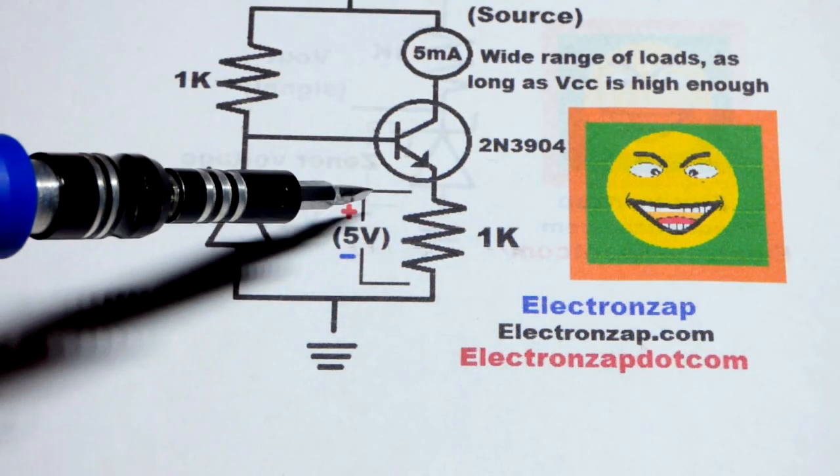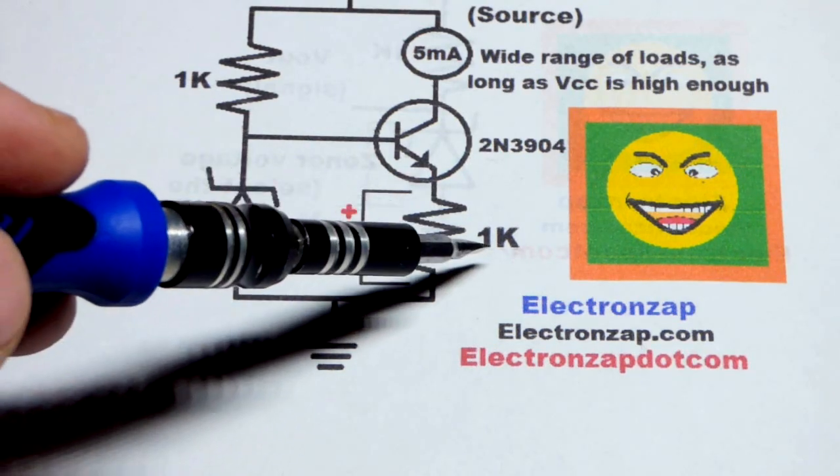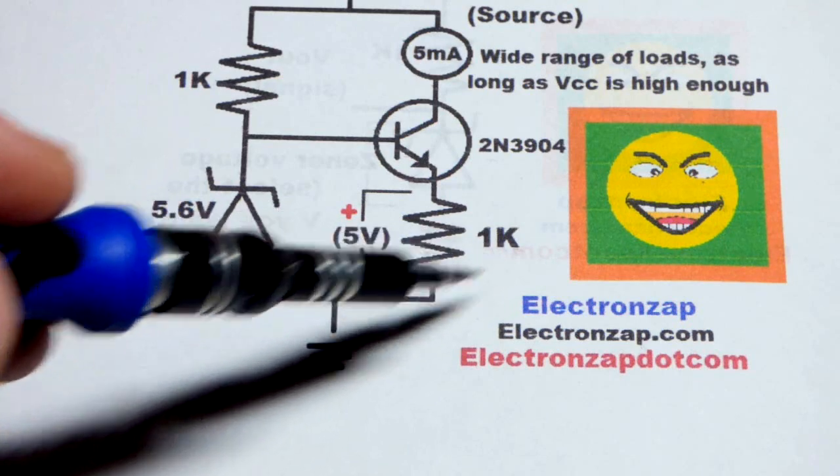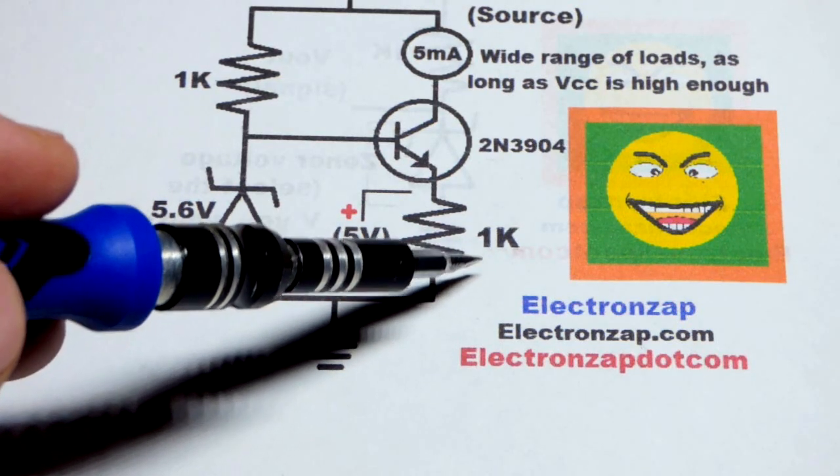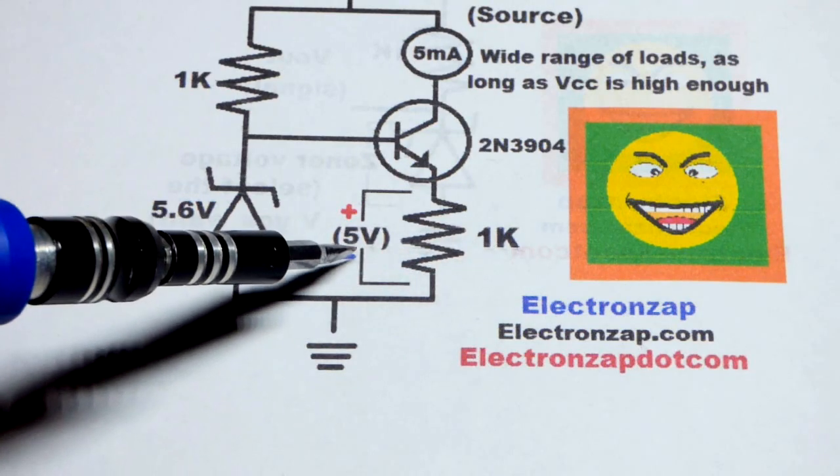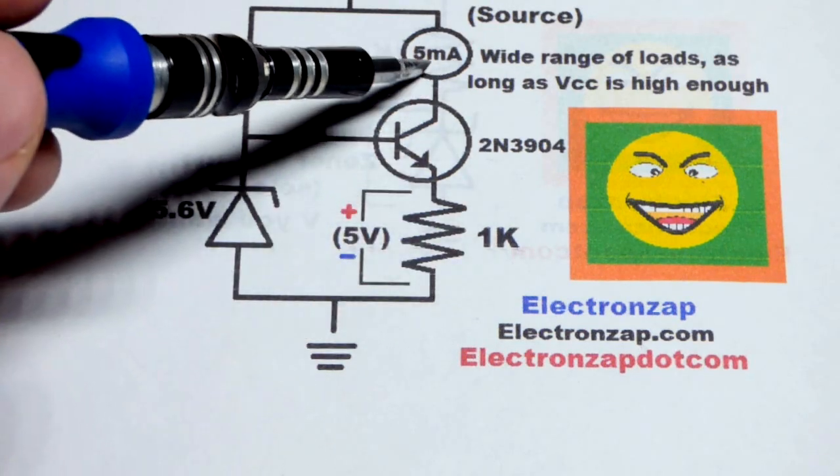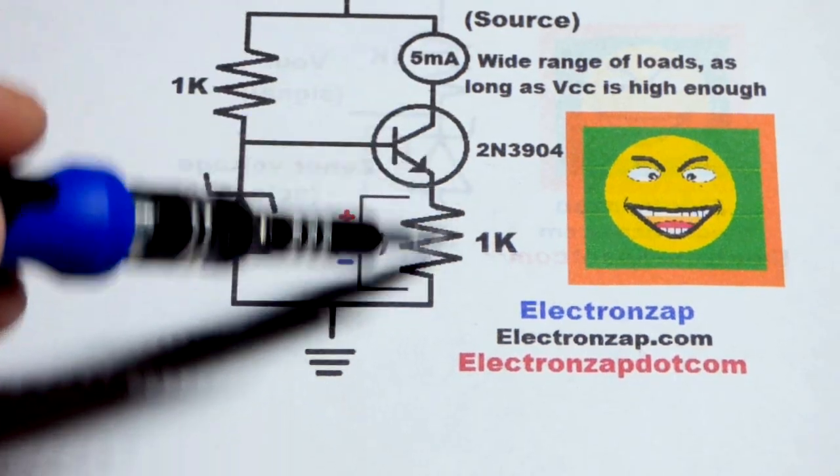And so we'll have 5 volts across the resistor. We're going to use a 1,000 ohm resistor, so we'll have 1,000th of amp, 1 milliamp per volt.